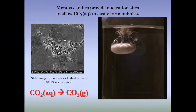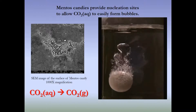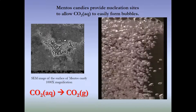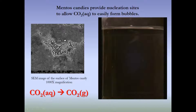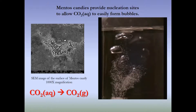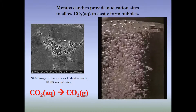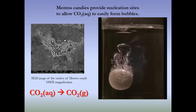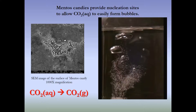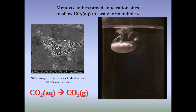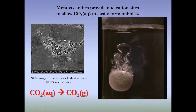So what makes this reaction happen? What causes this fountain? It's well known that Mentos candies provide nucleation sites that allow dissolved carbon dioxide in the beverage to easily form bubbles. When the Mentos candy is dropped in, those nucleation sites cause rapid degassing of supersaturated CO2, and the bubbles produced expand and push the foam out of the bottle. You can see a SEM image of the Mentos surface showing pits and pockets that act as nucleation sites, and the process can be represented as dissolved CO2 converting to gaseous CO2, producing the foam.